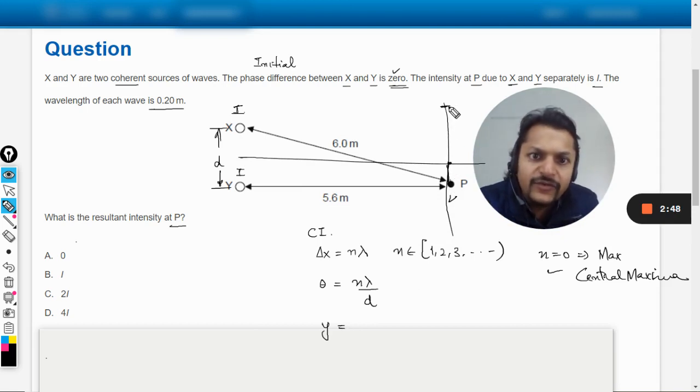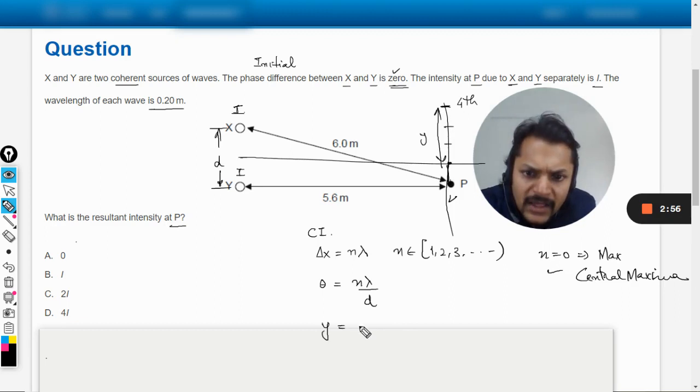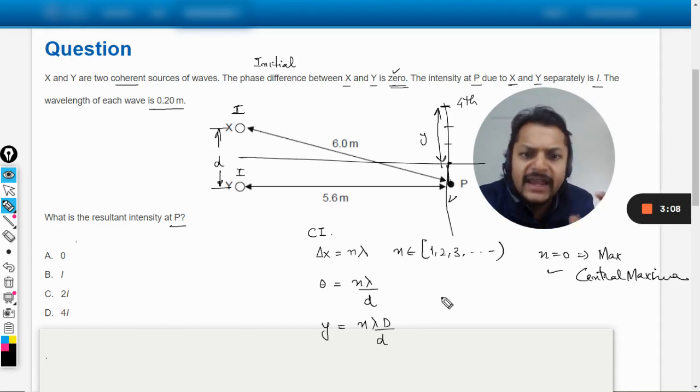If you talk about the vertical distance from the central maxima on the screen, this distance comes out to be nλ capital D divided by small d. The n is taken as 1 for first maxima, 2 for second, and so on. This is constructive interference.